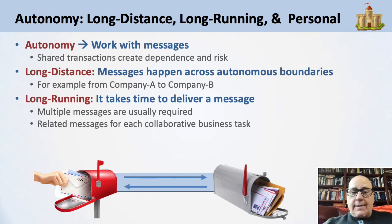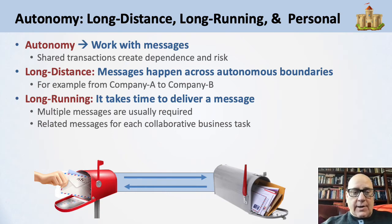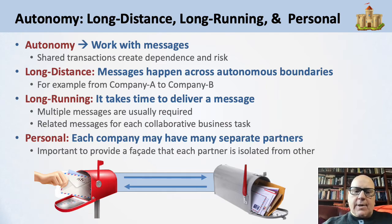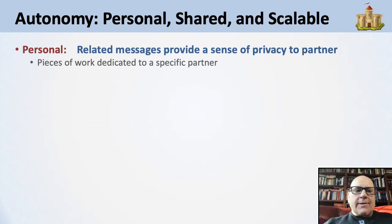Long-running — it takes time to deliver a message. You do work to generate the message and commit that in your system, then it goes across and gets processed on the other system. Multiple messages are usually required, and these are related messages for each collaborative task. It's also personal — each company may have many partners, but it's important to provide a facade that each partner is isolated from the other. If I go to a hotel, I don't want to know about the other guests, and the hotel doesn't want to tell me about them.